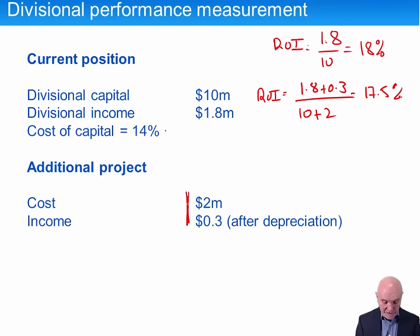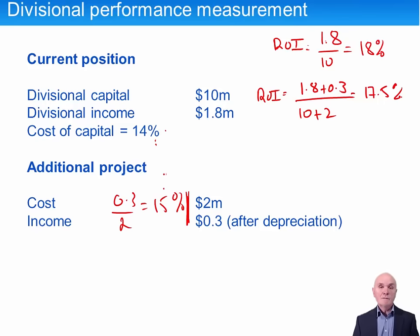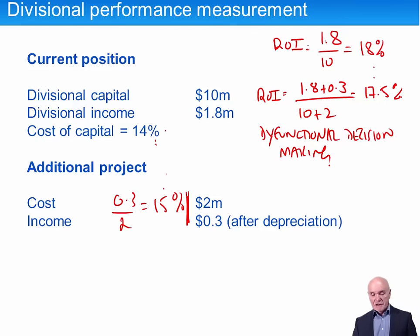And here's the dilemma: this investment is actually worthwhile. Looking at it on its own, we're getting £0.3m for £2m — that is 15%, which is above the 14% cost of capital. This would yield a positive net present value, yet the manager is saying no. We have a lack of goal congruence, or what might be called dysfunctional decision making. The manager is doing something good for the division but bad for the group.